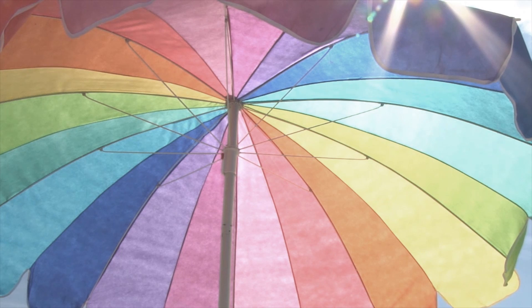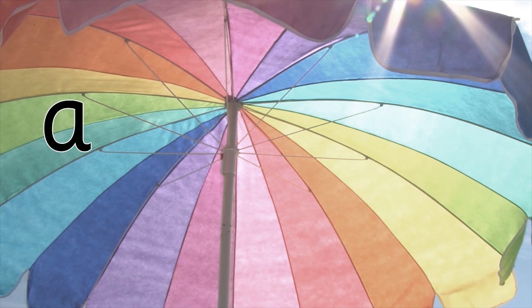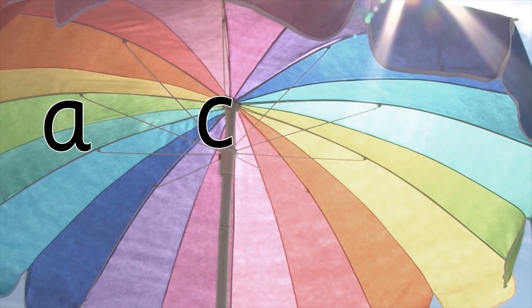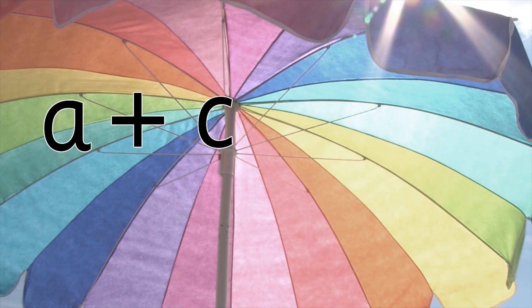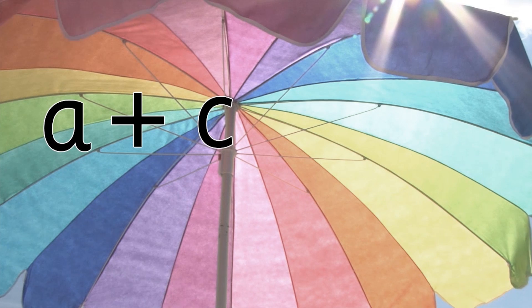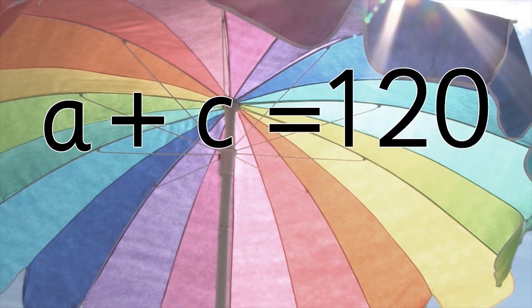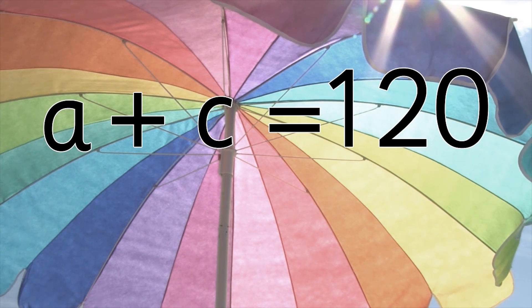But we can write an equation to calculate the numbers. Let's use the letter A to represent adults and the letter C to represent children. We know that the number of adults, A, plus the number of children, C, equals 120 guests. A plus C equals 120. That's our equation.